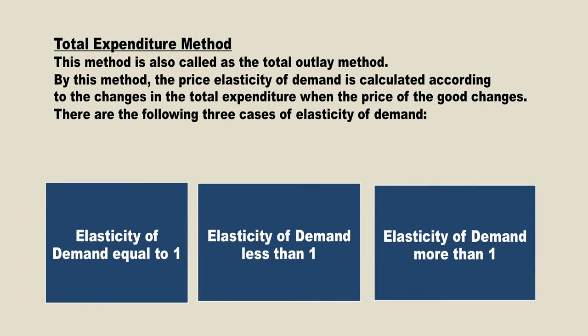The total expenditure method is the third method of calculating price elasticity of demand. This method is also called the total outlay method. By this method, the price elasticity of demand is calculated according to the changes in the total expenditure when the price of the commodity changes. There are three different cases: elasticity of demand equal to 1, elasticity less than 1, and elasticity more than 1.